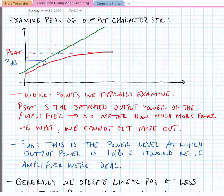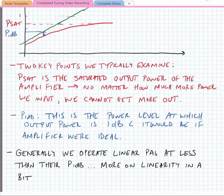P1dB is the power level at which the output power is 1 dB less than it would be if the amplifier were ideal. This is generally where we operate linear PAs — at less than their P1dB — and the more below their P1dB, the more linear they are. We'll discuss more on linearity in just a bit.